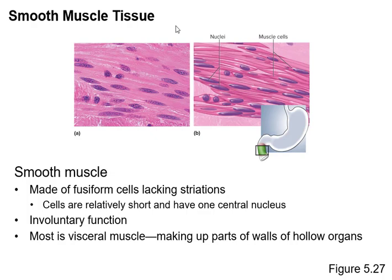Smooth muscle is involuntary. Cardiac muscle is striated but involuntary. Most of your smooth muscle is going to be in the walls of hollow organs. You've got it along your intestines to propel food along. Luckily, you don't have to sit there and say 'okay, stomach, push the food through.' It just does it by itself — it's under the control of hormones and neurotransmitters, so you don't have to think about it.